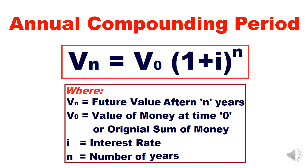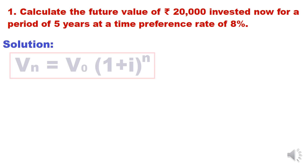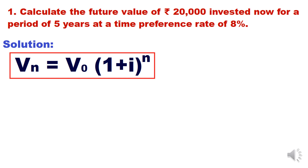For example, if you deposit ₹10,000 at 8% interest, we can calculate the value after five or six years using this formula. Let's solve this problem: calculate the future value of ₹20,000 invested now for a period of five years at a time preference rate of 8%. The formula is Vn = V0 × (1 + i)^n.